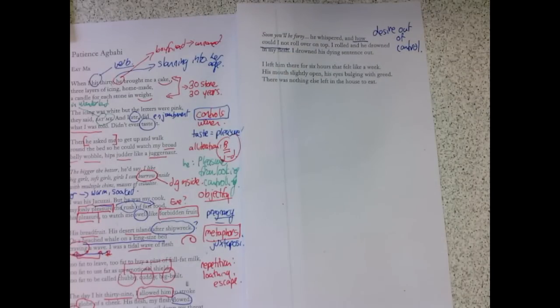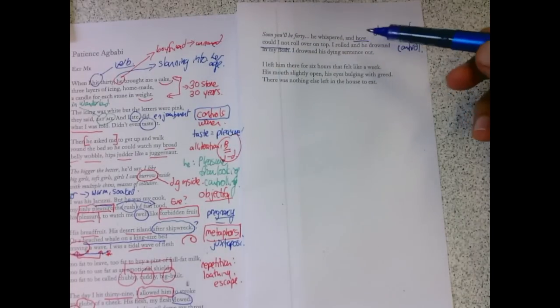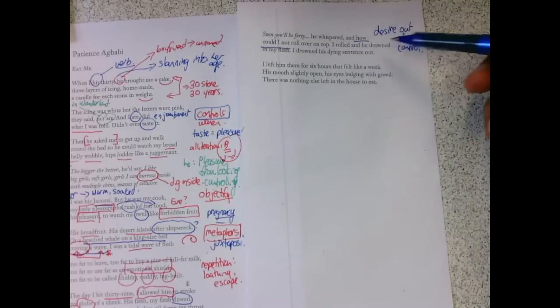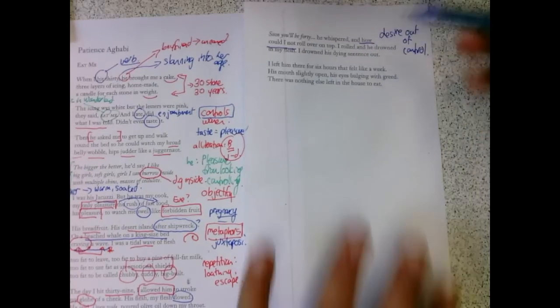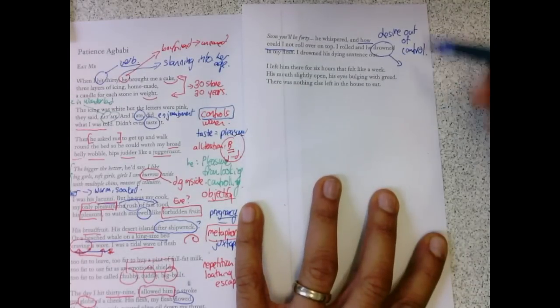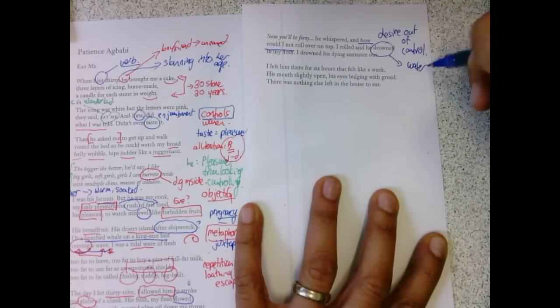Because she almost says, how could I not roll over on top? I rolled and he drowned in my flesh. I rolled and he drowned. We get that flesh and water continues.